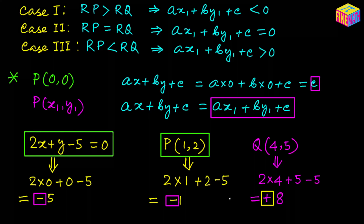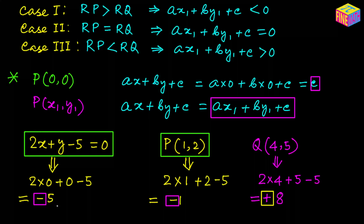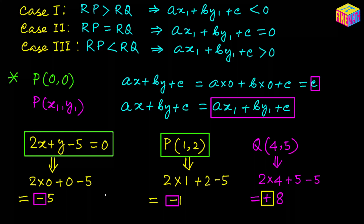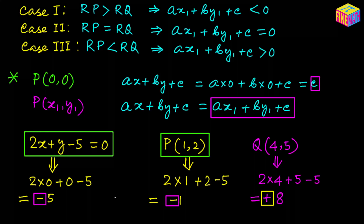Whenever we are given the coordinates of a point and the equation of a straight line, we can find which side of the line the point lies on. First, evaluate the expression using the origin's coordinates. Then evaluate using the point's coordinates. If both values have the same sign — both positive or both negative — the point and the origin lie on the same side. If the signs are opposite, they lie on opposite sides.